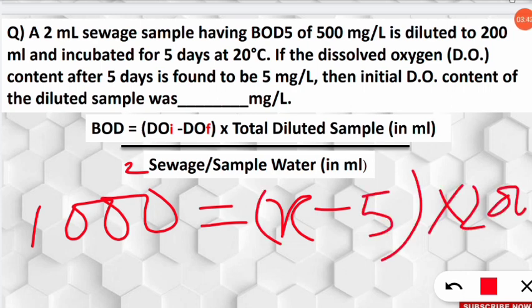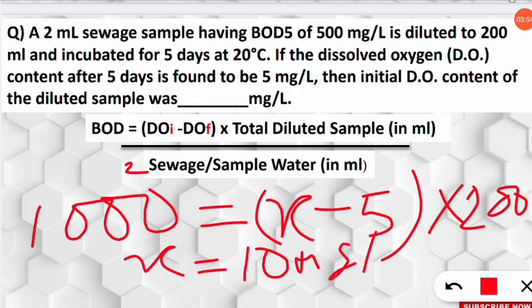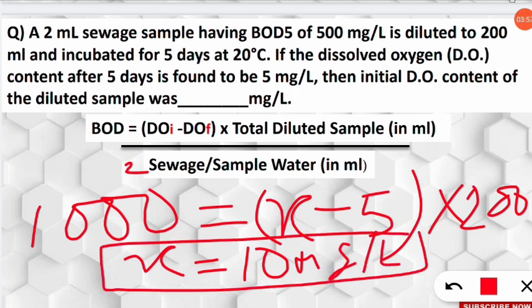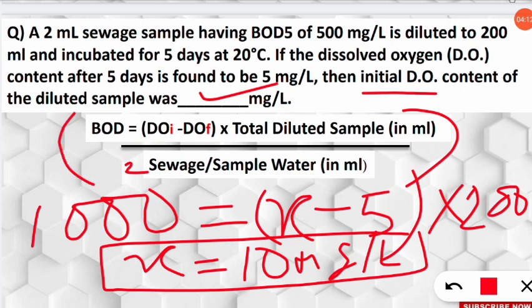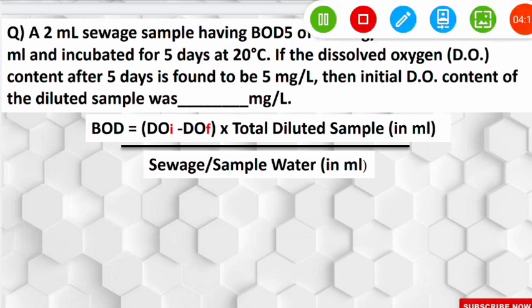After solving, 200 moves to the left-hand side and we get X = 10 mg/L. So the initial dissolved oxygen is 10 mg/L — that is the correct answer. Using this simple formula, you can find any unknown if asked in the question. I hope you followed this — let's move to the next question.